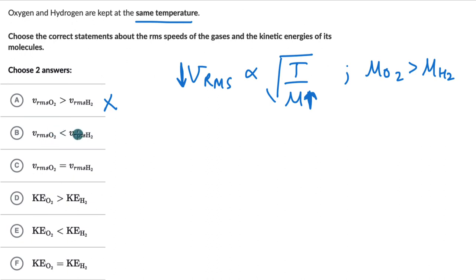And the second one by the same line of reasoning is right. So for hydrogen, the molecular mass is much less than oxygen, which means that the RMS speed of hydrogen must be more than that of oxygen. So this one is correct. Now the third one says they are equal. This is again wrong because we just talked about how the second option is right.